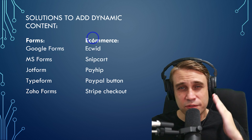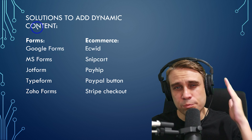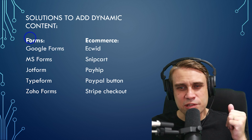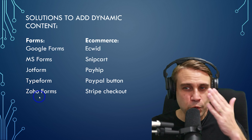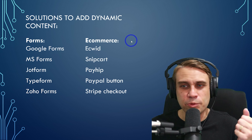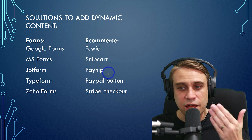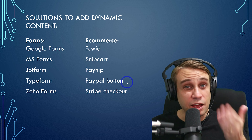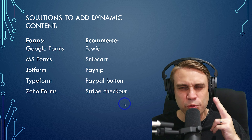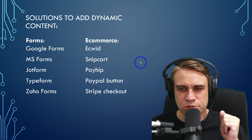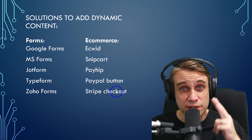I'm not going to do that in this tutorial, but just to point you in the right direction - for forms: Google Forms, Microsoft Forms, JotForms, Typeforms, Zoho Forms. These are ways you can embed forms onto the site without needing WordPress. Similarly with e-commerce, you've got Ecwid, Snipcart, PayHip, PayPal buttons, or Stripe checkouts. I've done a few of these on the channel as well and I'll put links in the description.